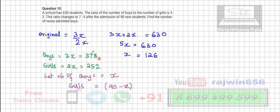This is the original number of boys and girls, 378 and 252. If I'm going to add this part, the new ratio is going to become 7 is to 5. So this is what I'm going to write over here, 378.